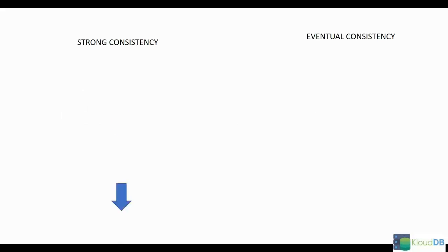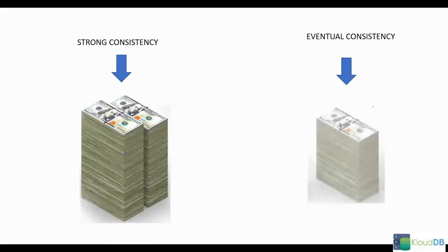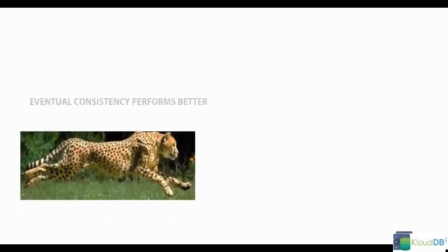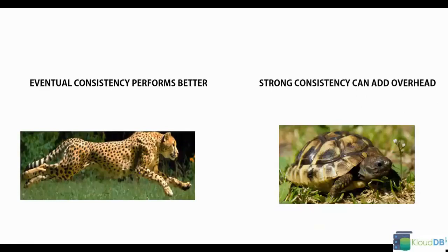Let us explore the cost difference. Strong consistency is going to cost you more money. With eventual consistency, it is almost half of what you pay for strong consistency. So if your data does not need strong consistency, always go for eventual consistency — you get better performance, a lower cost, and the default in DynamoDB is eventual consistency anyway. The cost of eventual consistency is half the cost of strong consistency.